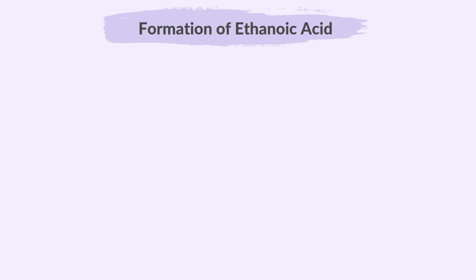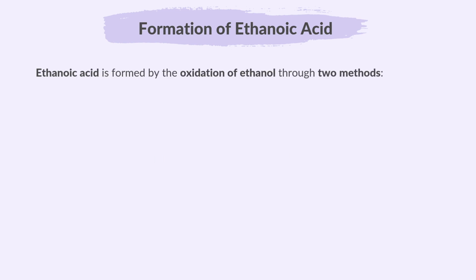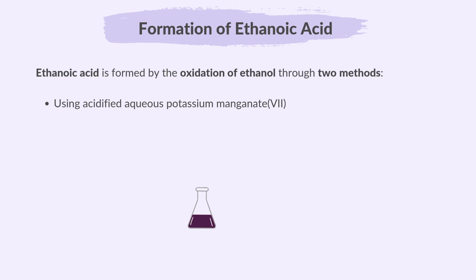Now let's explore how ethanoic acid is formed. Ethanoic acid is formed by the oxidation of ethanol. This is achieved by taking ethanol and adding an oxidizing agent to it, which adds oxygen to it, producing ethanoic acid. Ethanoic acid is formed through two methods: using acidified aqueous potassium manganate-7, and by bacterial oxidation during vinegar production.